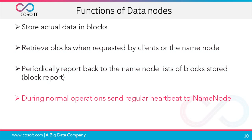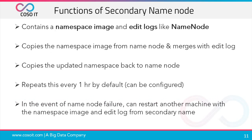During normal operations, the data node sends a regular heartbeat to the name node, ensuring it is still working properly. The secondary name node contains a namespace image and edit logs like the name node. It copies the namespace image from the name node and merges it with the edit log, and copies the updated namespace back to the name node. This process repeats every one hour by default, which can be configured. In the event of name node failure, it can restart another machine using the namespace image and edit log from the secondary name node.